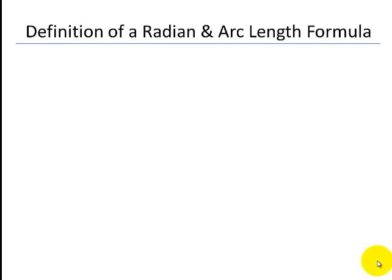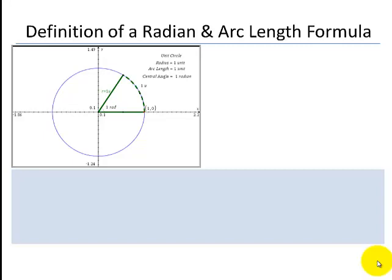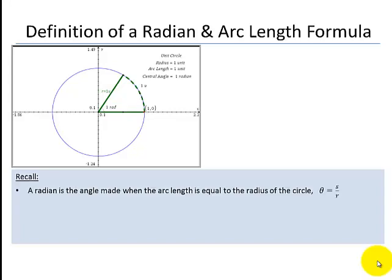Let's recall the definition of a radian and develop the arc length formula. A radian is the angle defined when the arc length is equal to the radius. So our central angle theta equals the arc length over r.